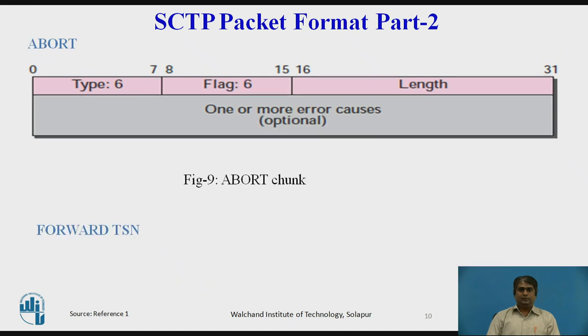Abort: The abort chunk is sent when an endpoint finds a fatal error and needs to abort the association. The error types are the same as those for the error chunk.